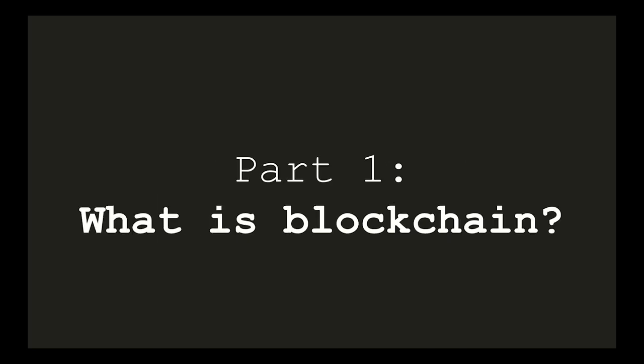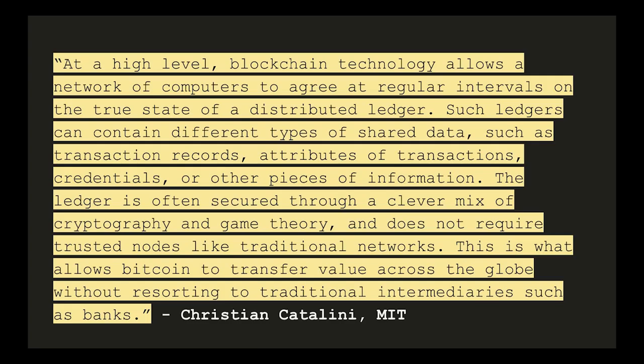In this first part I'll be giving you a small theoretical foundation of a blockchain which we can then use to code. A blockchain is an incredibly secure, sequential and immutable ledger of records called blocks that run on a distributed network of nodes without those nodes needing a third party to rely on for the integrity and state of that ledger. Put well by MIT professor Christian Catalini: 'At a high level, blockchain technology allows a network of computers to agree at regular intervals on the true state of a distributed ledger.' Such ledgers can contain different types of shared data such as transaction records, attributes of transactions, credentials or other pieces of information. The ledger is often secured through a clever mix of cryptography and game theory, and does not require trusted nodes like traditional networks. This is what allows Bitcoin to transfer value across the globe without resorting to traditional intermediaries such as banks.